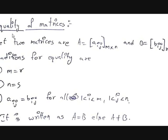Let's start equality of matrices. Let there be two matrices: A is equal to Aij m by n, and B is equal to Bij r by s. We discussed in the previous video how to represent a matrix in a single form — Aij where i is which row the element is present in and j is which column the element is present in.